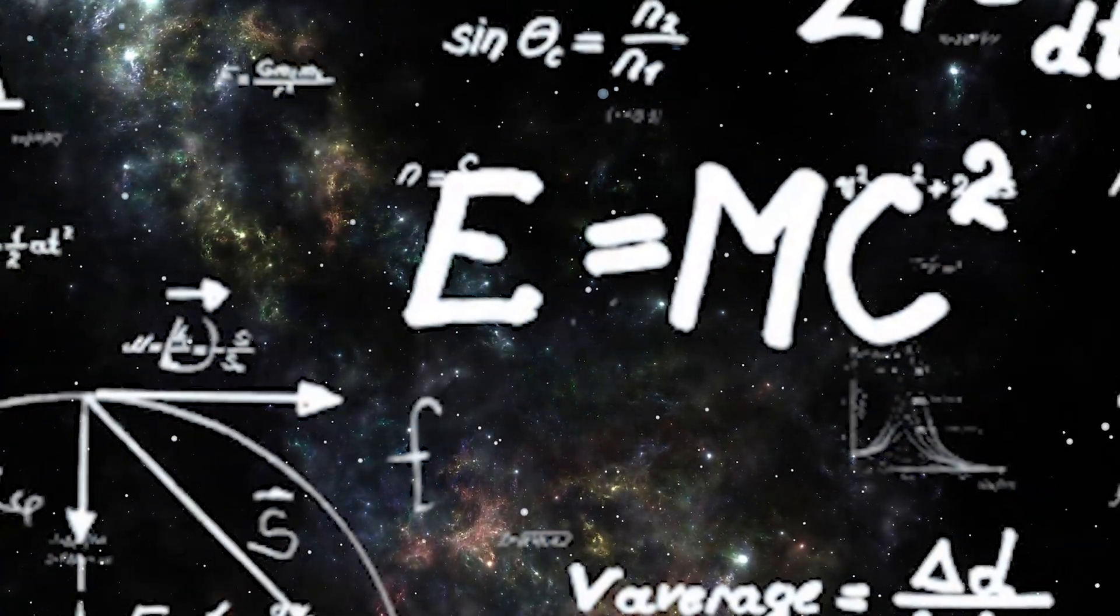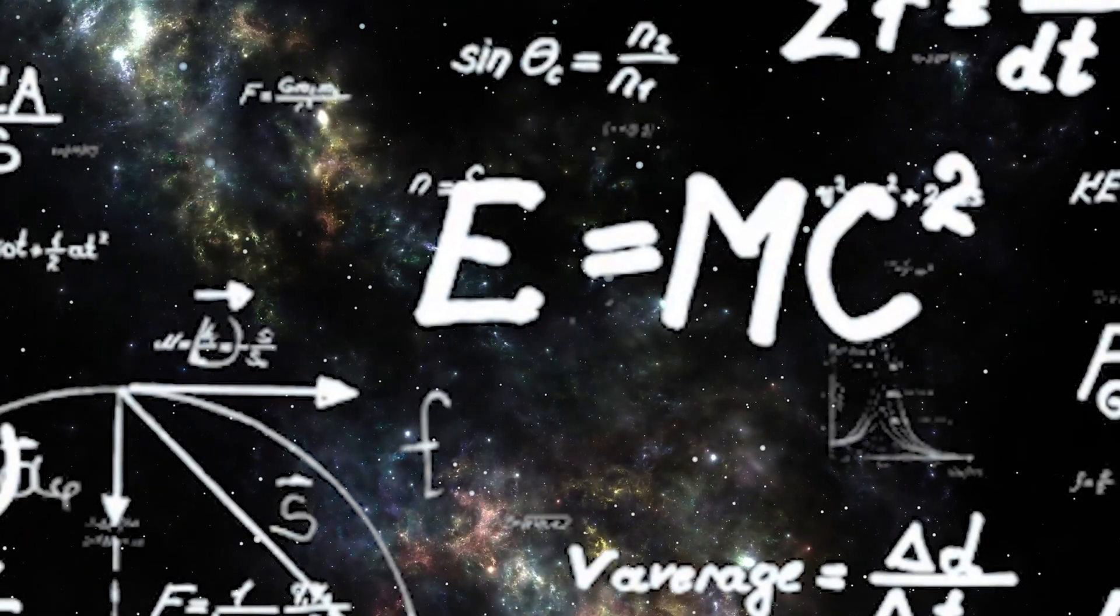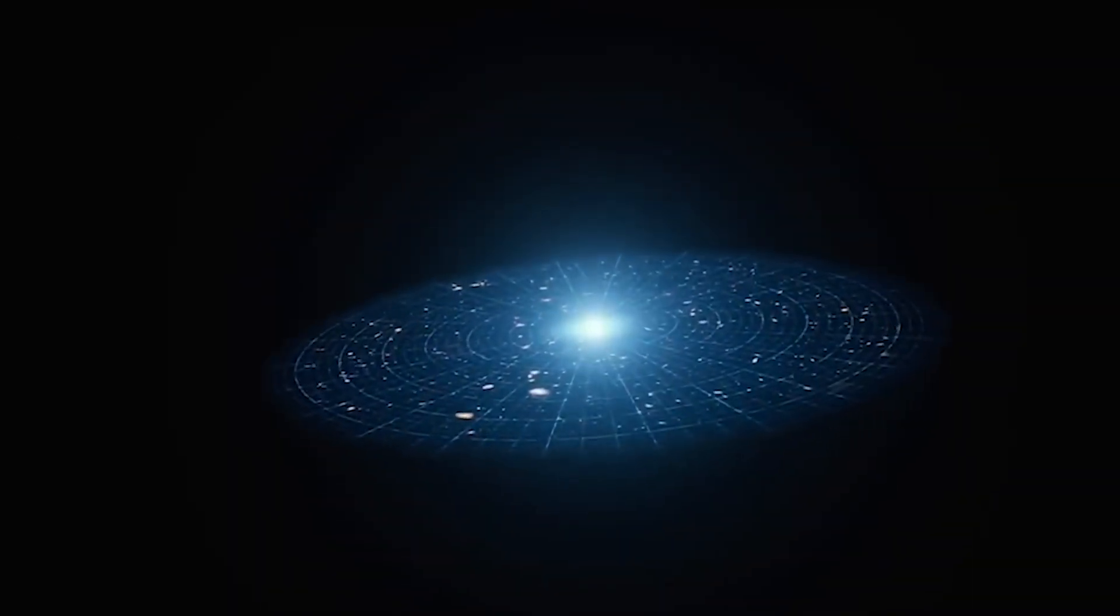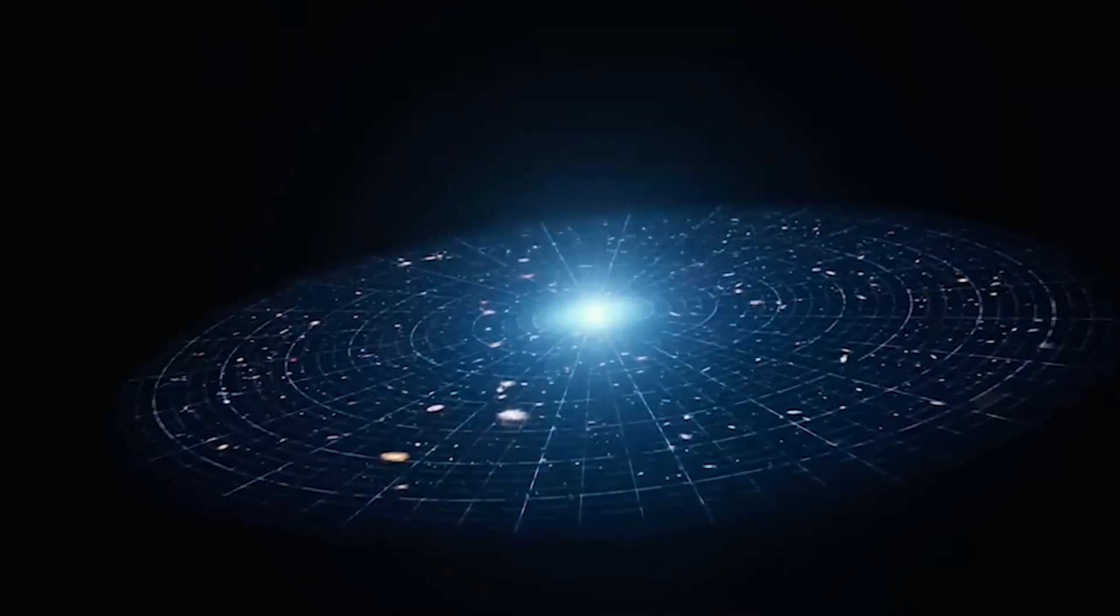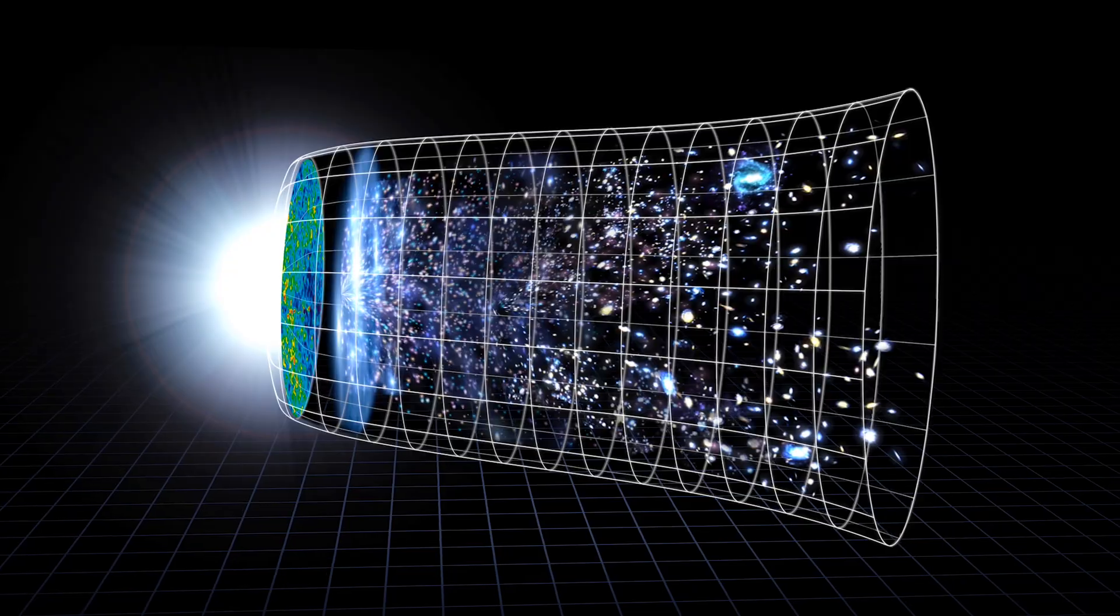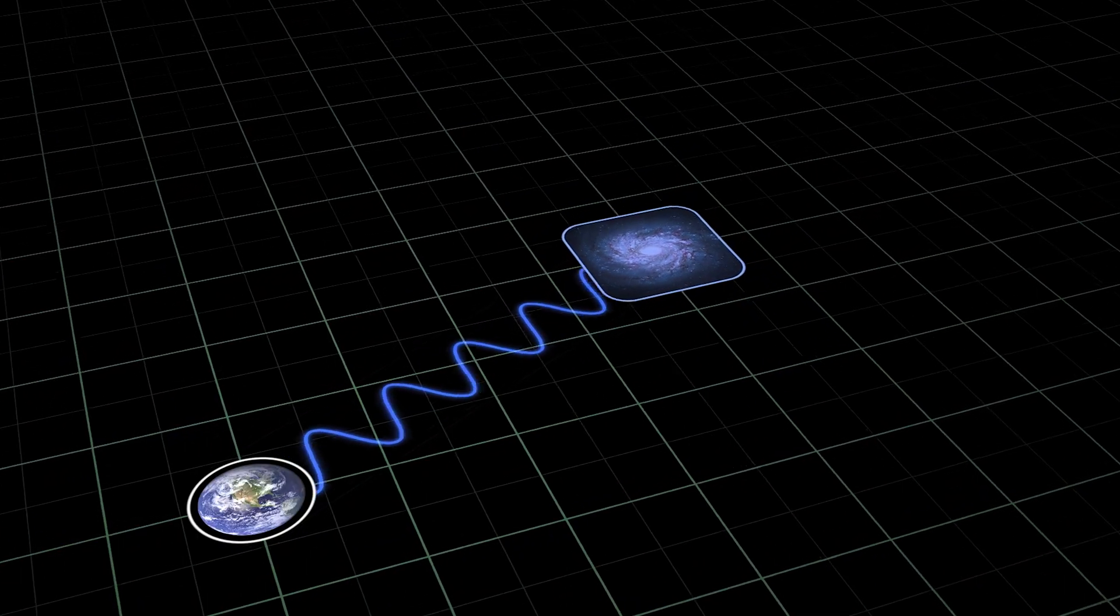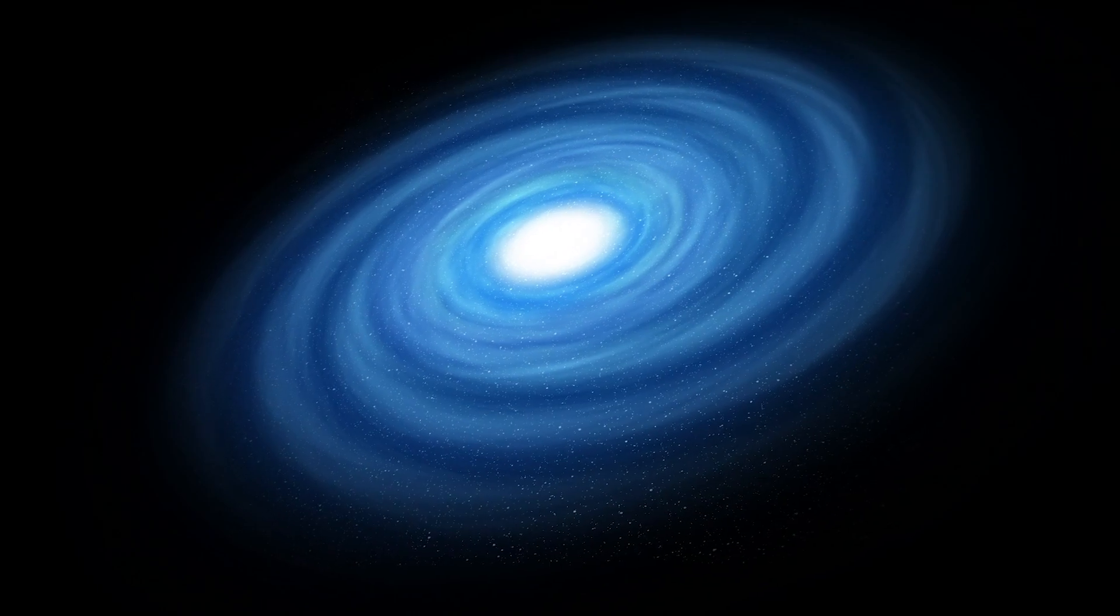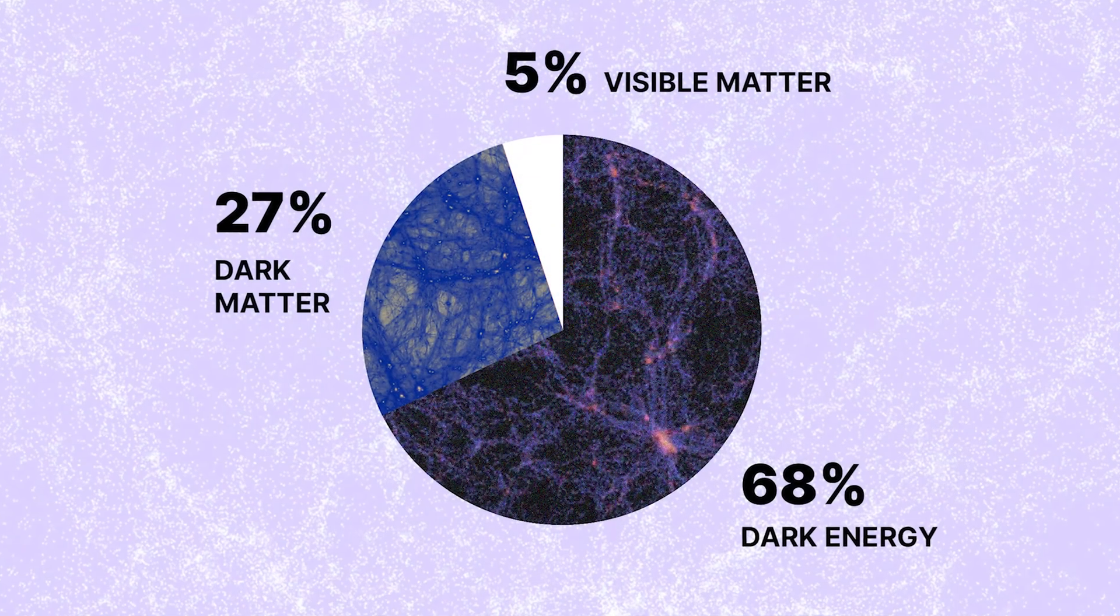Other models, like modified gravity theories and emergent space-time ideas, have wandered down similar paths. But this one stands out for how clean and elegant the math is. It tweaks the rules, steps back, and lets the equations do the talking. And the best part? It still agrees with what we observe across the cosmos. It explains what Lambda-CDM explains, but it also explains why the universe speeds up in the first place.